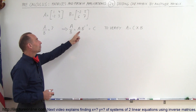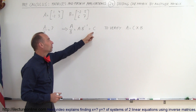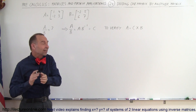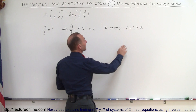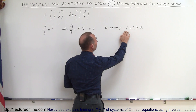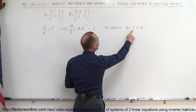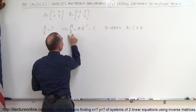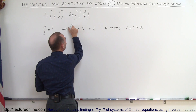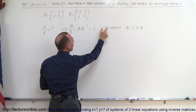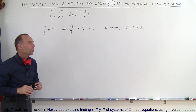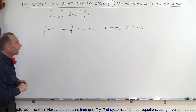And of course, if A times the inverse of B equals C, then we can verify that by saying A must equal C times B — move the B over, and A must be C times B. So we'll go ahead and verify if what we did was correct.